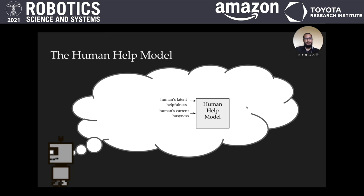The model takes in the human's latent helpfulness, their busyness at that time, and the robot's past frequency of asking them for help. Latent helpfulness is an individual factor, and busyness and frequency are contextual factors.